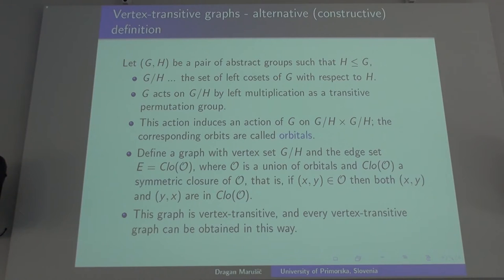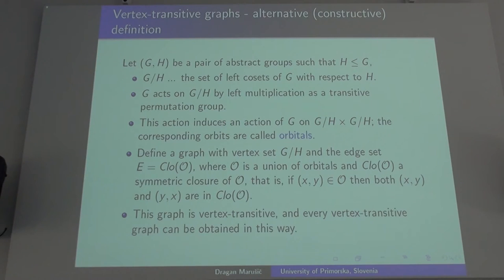What is important is that this construction gives a vertex transitive graph, and vice versa: any vertex transitive graph is obtained precisely in this way. So if you look at the class of vertex transitive graphs, that is really just pairs of groups with an appropriate combinatorial structure.